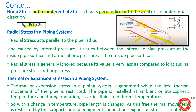Hoop stress and longitudinal stress are the two basic stresses mainly responsible for piping deformation. Radial stress, by contrast, is generally not taken into account during piping stress analysis. Radial stress acts parallel to the pipe radius and is caused by internal pressure. It varies between the internal design pressure at the inside pipe wall and atmospheric pressure at the outside surface. Its value is very small compared to longitudinal or hoop stress, so most designers neglect it.